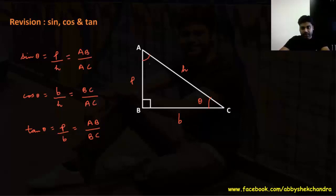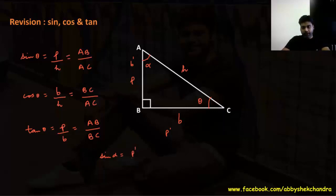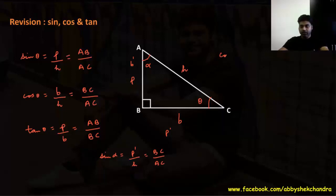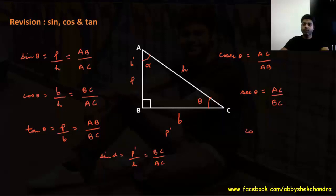Coming back to theta: cosec theta is the reciprocal of sin theta, so it is AC by AB. Sec theta is the reciprocal of cos theta, so it is AC by BC. Cot theta is the reciprocal of tan theta, so it is BC by AB.